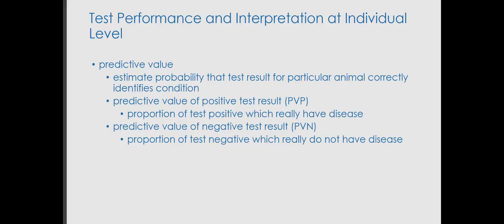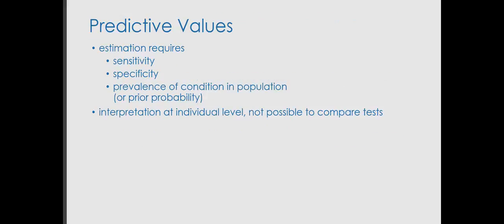If I want to look at test performance in the context of interpretation of the individual animal, I need to be aware of the role of predictive values. What they are is an estimate of the probability that the test result we have obtained reflects true disease status. We've already done the test and got the result, and the question is: what's the probability that the animal truly has the disease, or truly does not have the disease? One is the predictive value for a positive test result, and the other is the predictive value for a negative test result. The information needed to estimate those values are the performance characteristics of the test — sensitivity and specificity — covered in my other video, and some idea of the prevalence of the condition in the population.